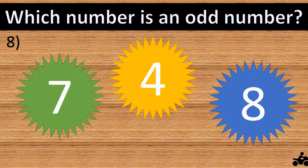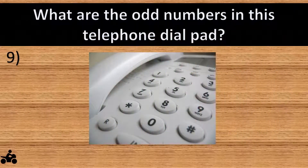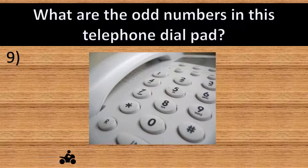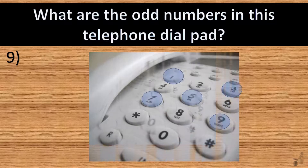The answer is number eight. Question number eight: which number is an odd number? The answer is number seven. Question number nine: what are the odd numbers in this telephone dial pad? The answer is numbers one, three, five, seven, and nine.